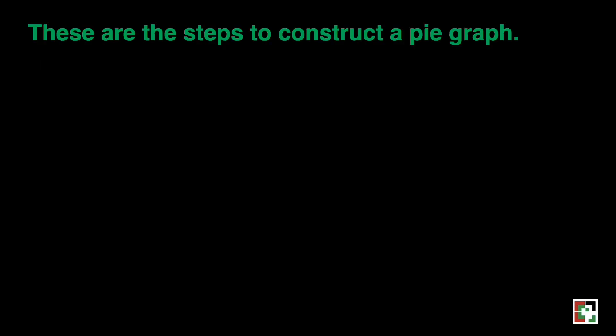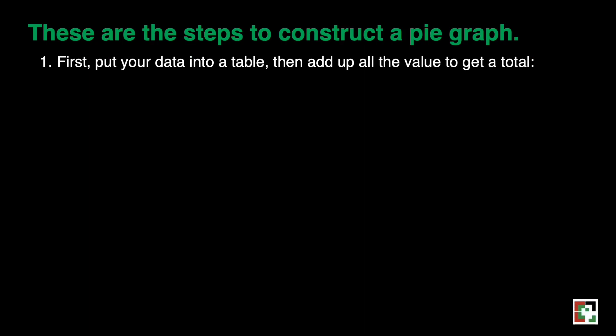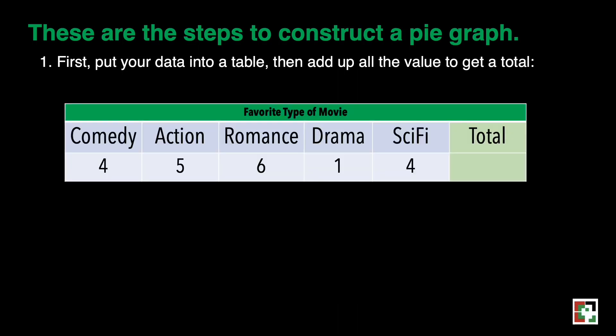These are the steps to construct a pie graph. First, put your data into a table. Then add up all the values to get a total. 4 plus 5 plus 6 plus 1 plus 4 is equal to 20. So that is our total, meaning there are 20 friends that you have surveyed.